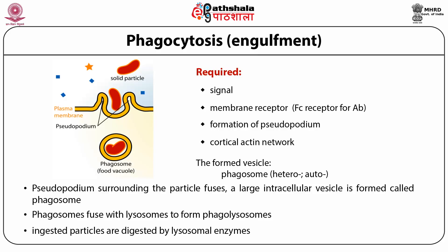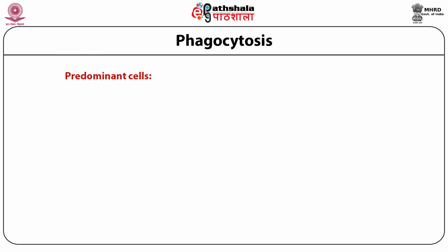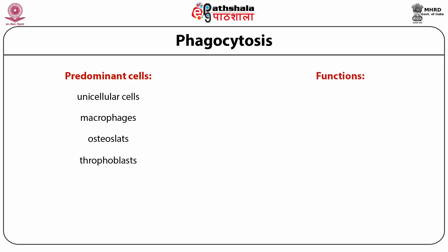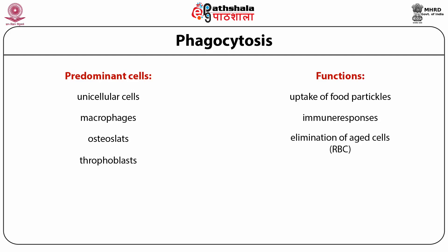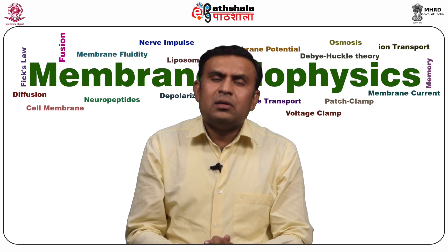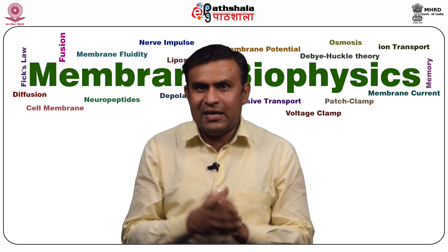Phagocytosis is an active and highly regulated process involving specific cell surface receptors and signaling cascades mediated by Rho family GTPases. The predominant cells which play important roles in phagocytosis are unicellular organisms, macrophages, osteoclasts, and trophoblasts. These cells perform important functions like uptake of fluid particles, immune responses, and elimination of aged cells such as RBCs.